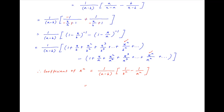And this is equal to (a raised to the power n minus b raised to the power n) divided by (a minus b) times (a raised to the power n) times (b raised to the power n). And this is the required answer.